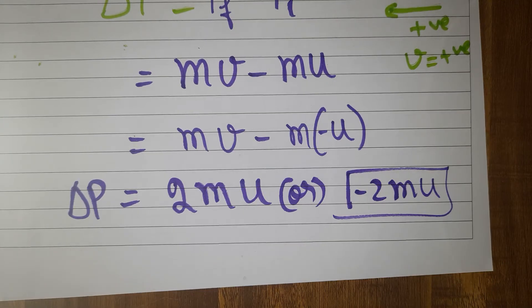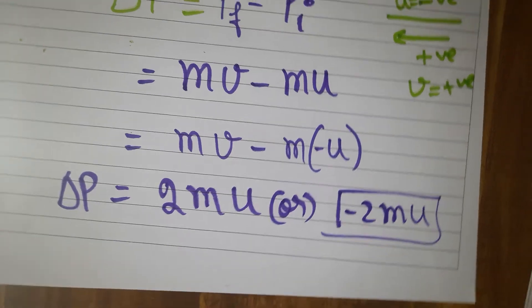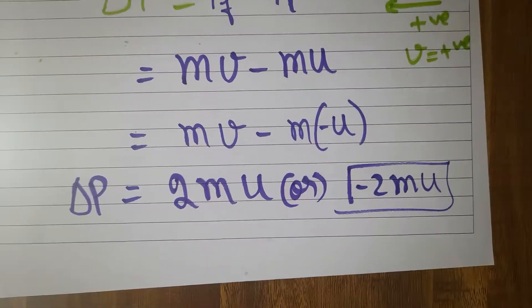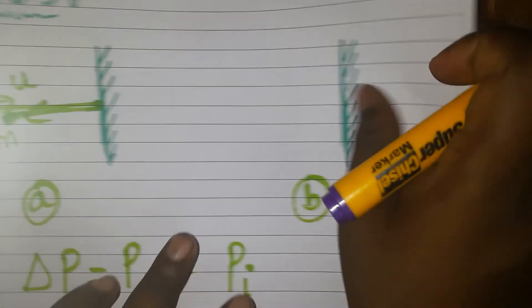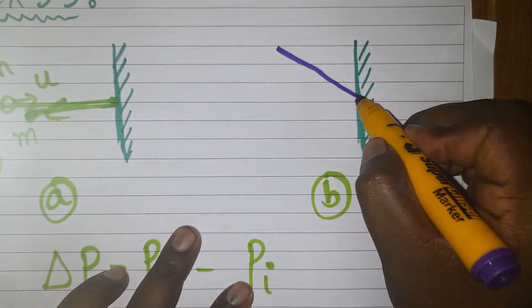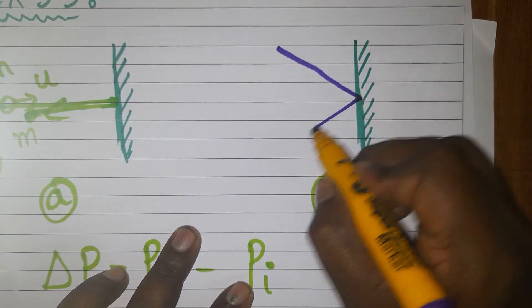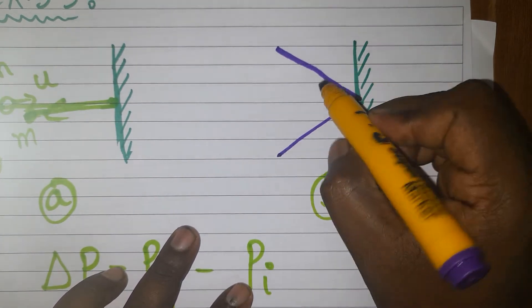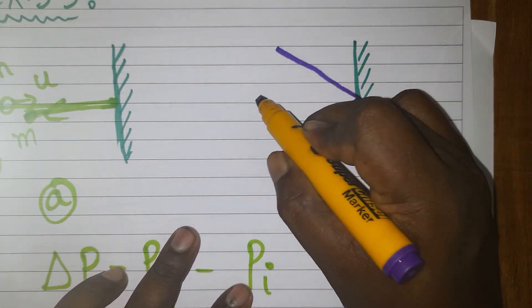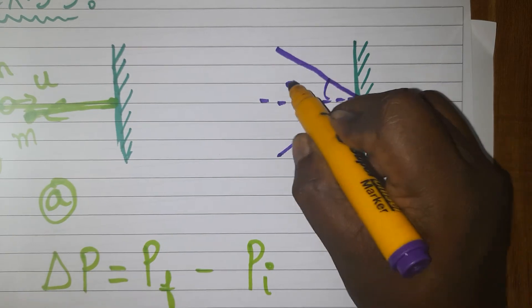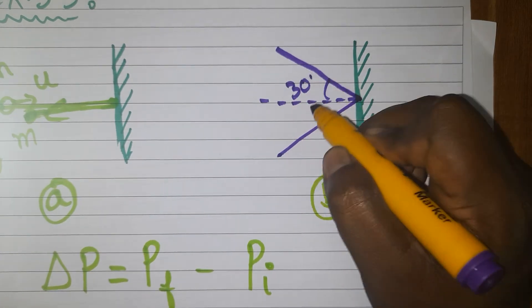Now I am going to do Case 2. The ball hits the wall at an angle of 30 degrees. When the angle is given as 30 degrees, the ball hits the wall at 30 degrees and bounces back at 30 degrees. From the normal, we should take it as a resolution — let me show how.